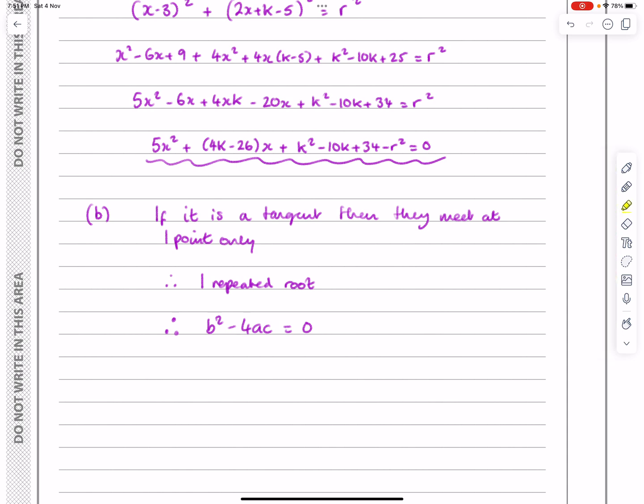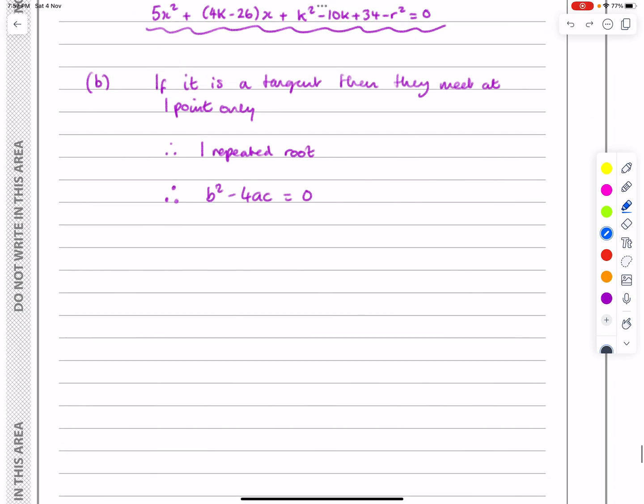Now, when I'm talking about b² - 4ac = 0, what we're saying here is that A is 5, B is 4k - 26, and C is all of that bit there. So when I'm doing b² - 4ac, those are my A, B, and C. Let's do that then. That's just for you, obviously, in terms of the examiner. I'm going to show that with what I'm doing now. So B² is (4k - 26)² - 4 lots of A times C. So 4 times 5 times C, which is this k² - 10k + 34 - r².